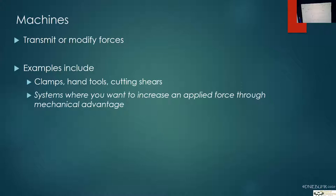Essentially, a machine is something that can transmit or modify forces. Hand tools are a good example, because oftentimes if you're trying to get a mechanical advantage — say cutting a wire or using pliers to hold something — you can't impart the same force with your fingers as you can with a pair of pliers. It all comes down to leverage and using moment arms to create this extra force.